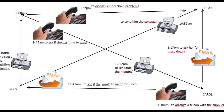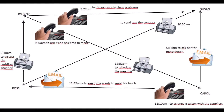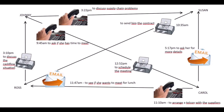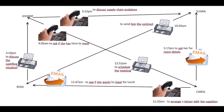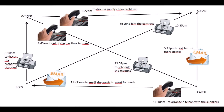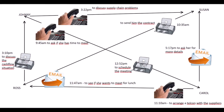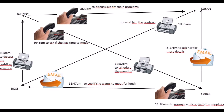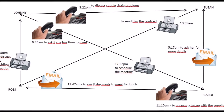Today we're going to concentrate on three non-subject questions. First, we'll formulate the object question: 'wen hat Johnny angerufen?' — 'Who did Johnny ring?' And the answer is Carol. Then the time of the call: 'wann hat Johnny Carol angerufen?' And the reason for the call: 'warum hat Johnny Carol angerufen?'